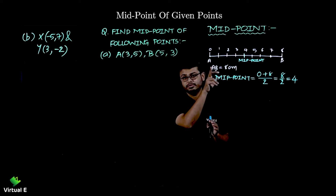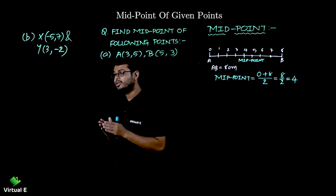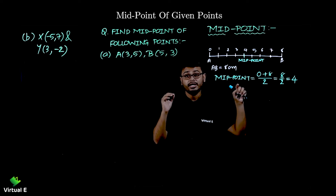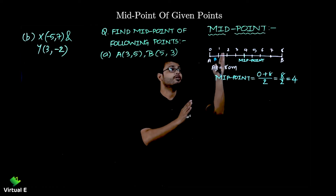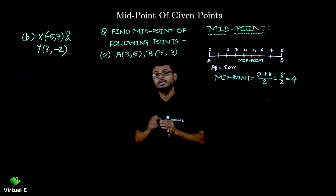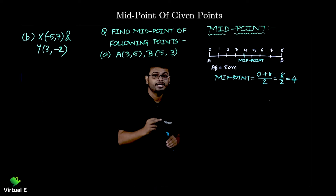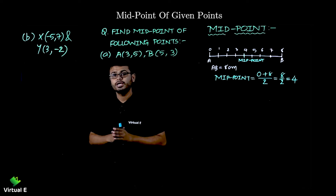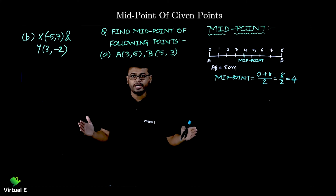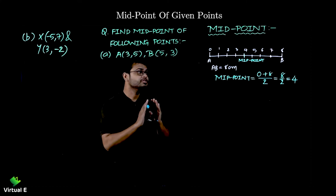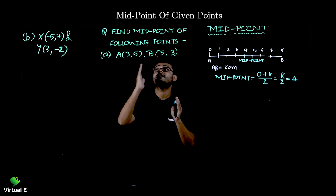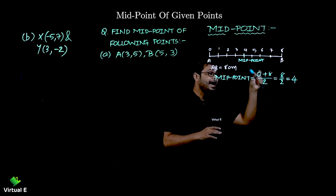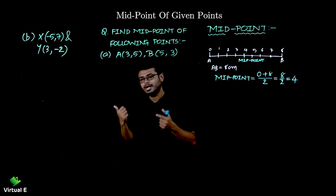Now let's say I give you a different starting point — find the midpoint between two and eight. That is two plus eight, which gives ten, divided by two gives five. So the midpoint shifts to five. To find the midpoint, add the starting point and the ending point and divide by two. Let's first learn for one dimension, then we'll deal with two dimensions in coordinate geometry.